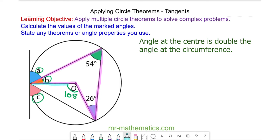And here we have an isosceles triangle because the two lengths are radii of the same circle. So each of these angles will be equal and they will be 36 degrees each.